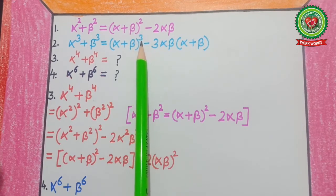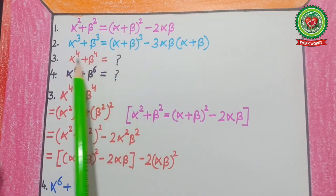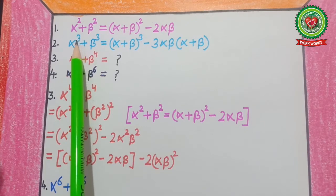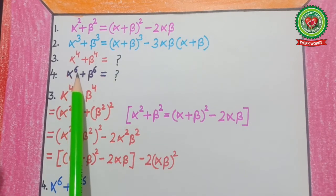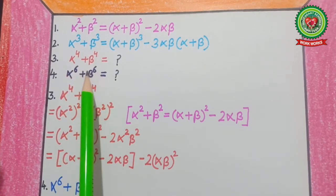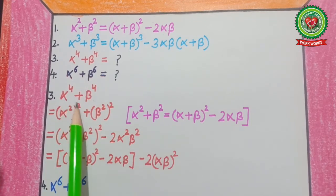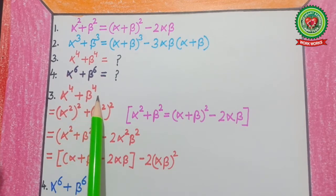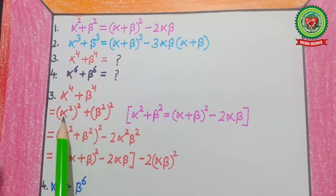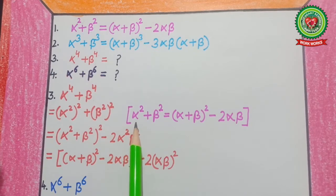Now, how are we going to solve this type of question when degree is more than 2 and 3? Here we have α⁴+β⁴ and α⁶+β⁶. This type of question is solved by using these two formulas. For α⁴+β⁴, first of all break the power: write it as (α²)²+(β²)², then apply the formula for a²+b².